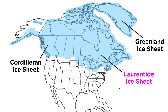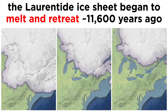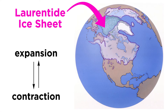By about 2.6 million years ago, the Laurentide ice sheet covered most of Canada and the northern third of the eastern and central United States, which began to melt and retreat around 11,600 years ago. Though the ice sheet existed throughout this period, it would expand and contract periodically in response to global climate.